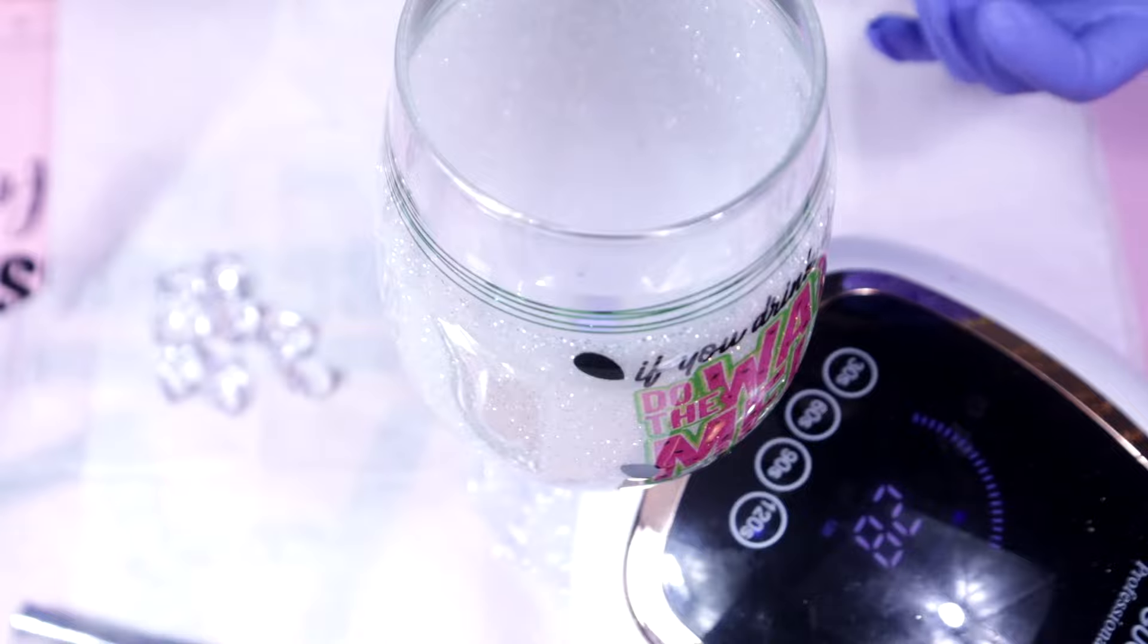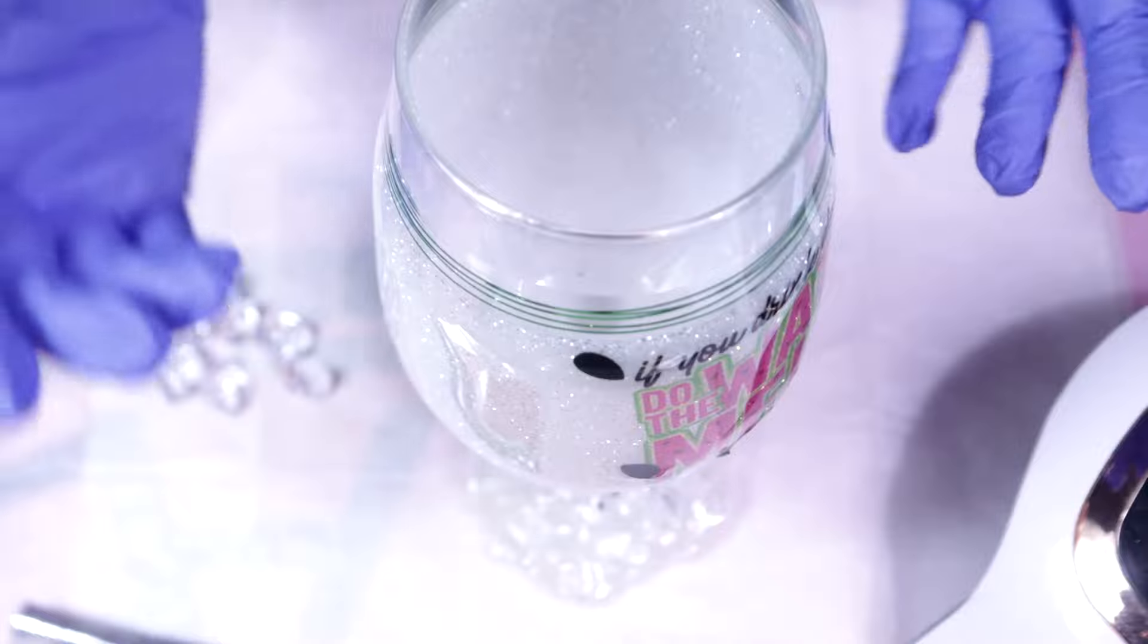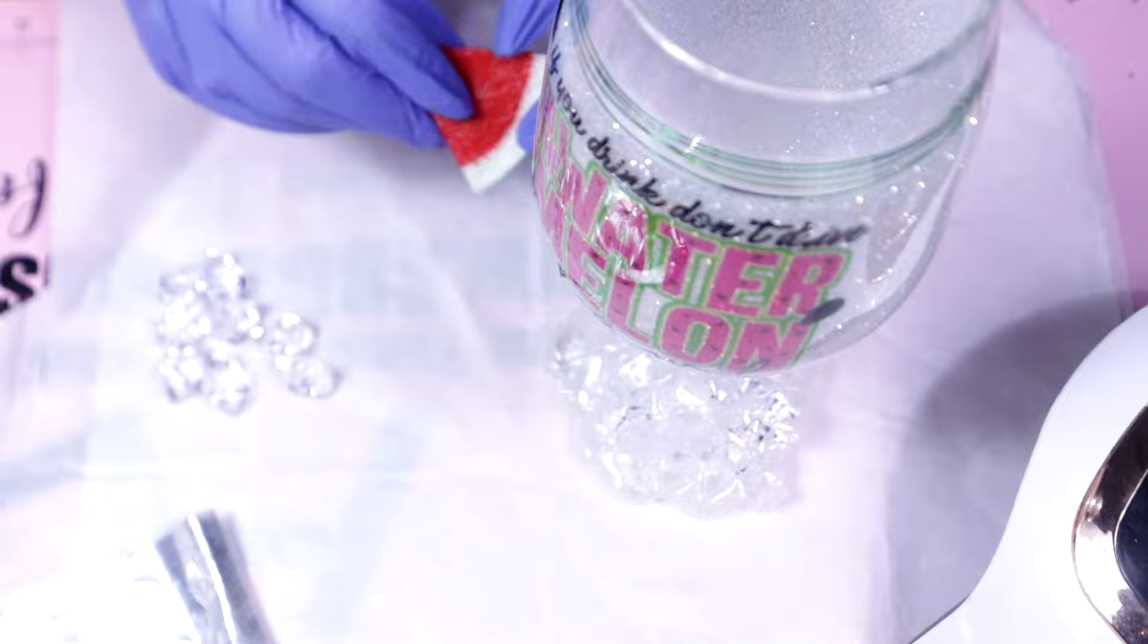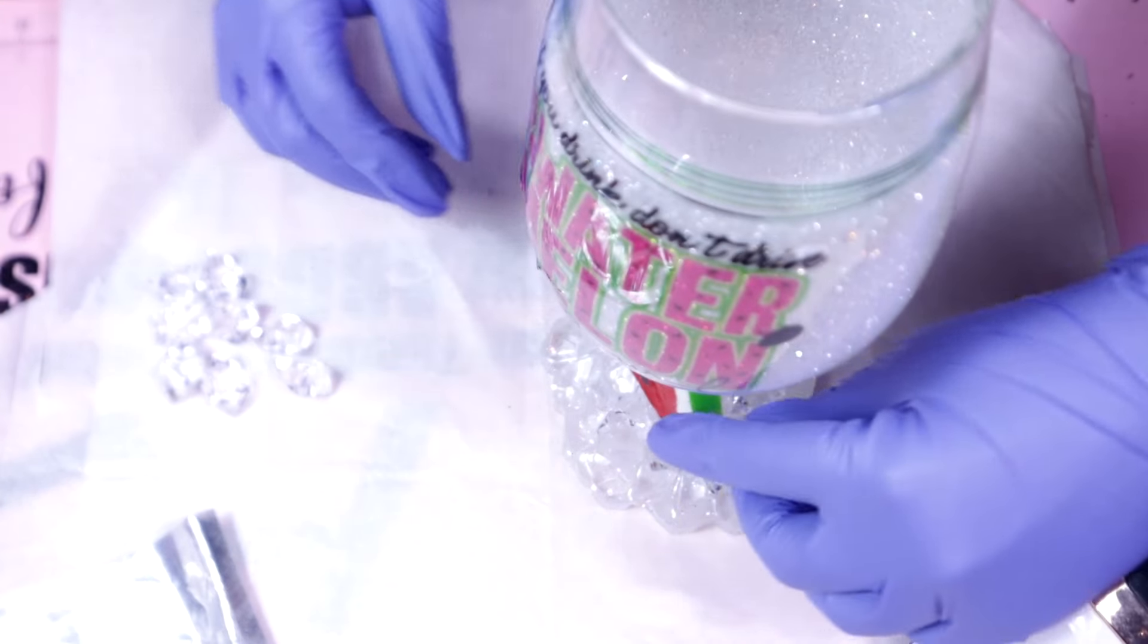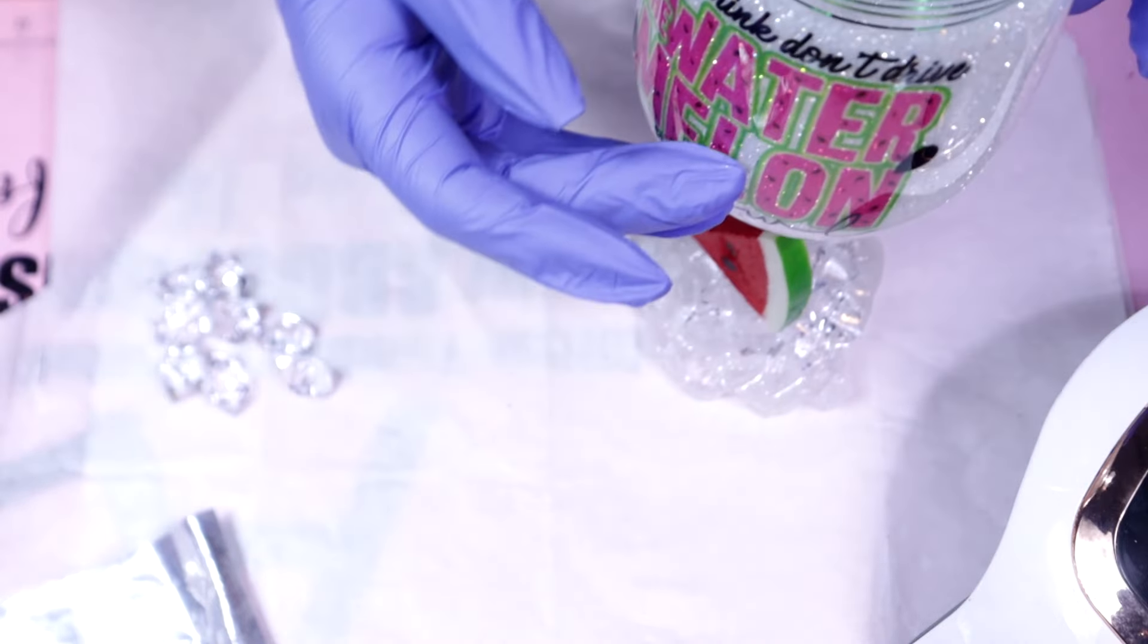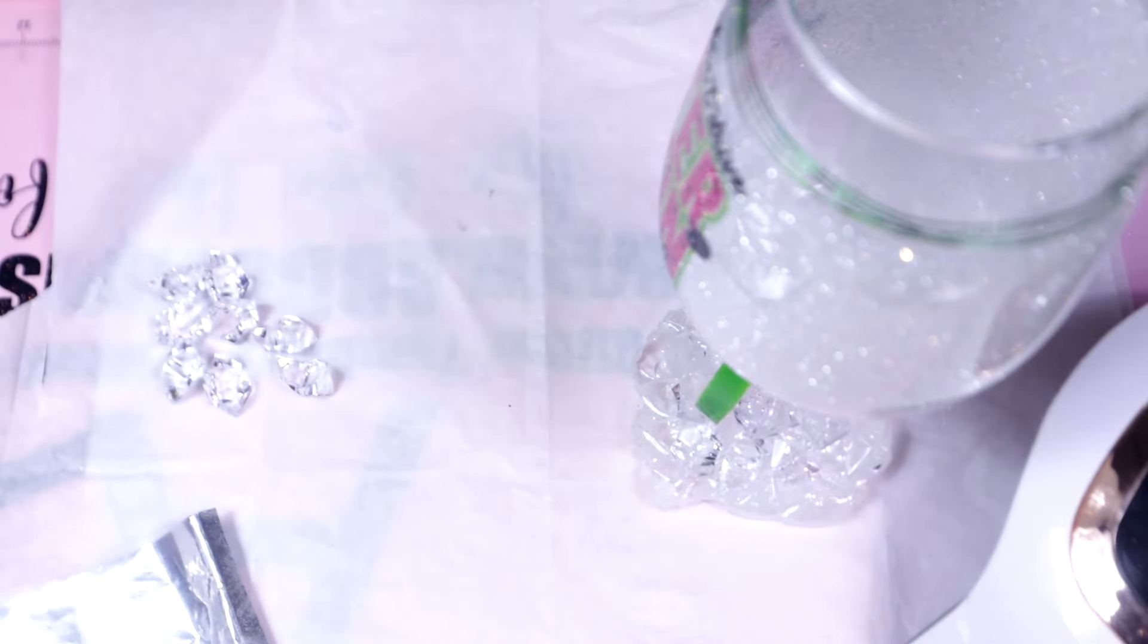When working with UV resin, you obviously want to build a little bit here, cure it, build a little bit there, and then cure it again. Each time I start building up, I will go about 30 to 40 seconds and then stop, go back in, continue to fill up the way that I want it, and then continue to cure. Once I feel like I've decorated the base the way that I wanted it, I'll go in for a good five minutes, curing 120 seconds at a time, just to really make sure that I've cured the entire base.